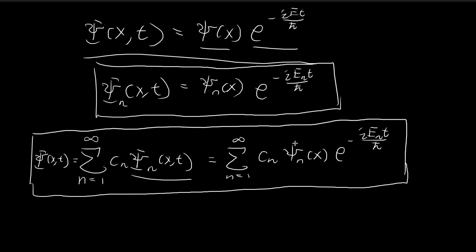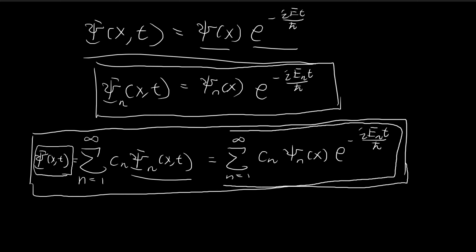Recall that in classical mechanics we're always doing something similar — we have a particle bouncing around, we come up with equations of motion for its position, and we always use initial conditions like initial velocity and initial position to narrow down the solutions and get a formula describing the particle's position. We're doing the same thing in quantum mechanics, except instead of an equation of motion we're dealing with a wave function, so we also have to deal with initial conditions.